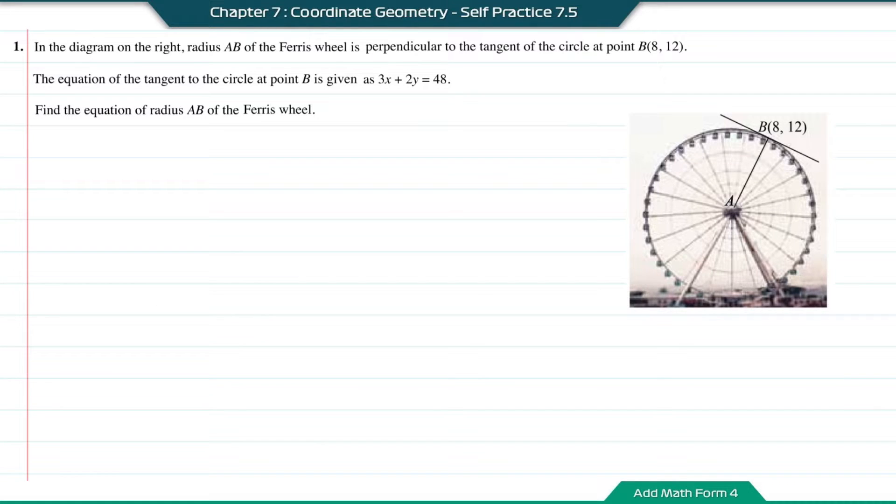Self Practice 7.5, question number 1. In the diagram on the right, radius AB of the Ferris wheel is perpendicular to the tangent of the circle at point B(8,12). The equation of the tangent to the circle at point B is given as 3x + 2y = 48. Find the equation of radius AB of the Ferris wheel.